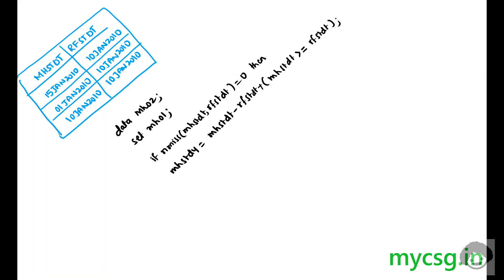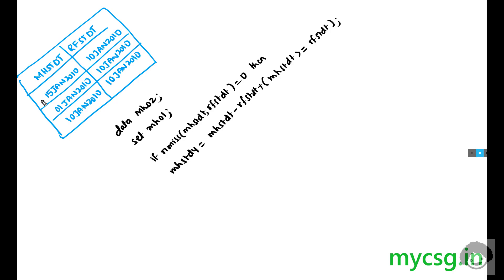Welcome back to this video series on Clinical SAS programming. A user has asked me to explain a line of code used in study day variable creation in some SDTM domains. Here I am taking the example of the SDTM MH domain, where we have two variables: MHSTDT and RFSTDT. There are three observations with values of 15th Jan, 1st Jan, and 10th Jan in MHSTDT. For this subject, the reference start date is 10th Jan, so that value is the same across all three records.